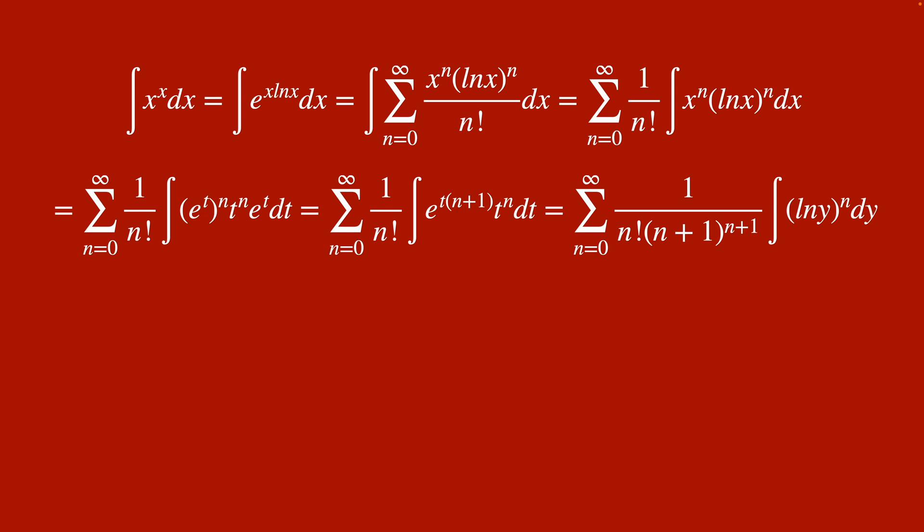I'm going to do our second substitution. I'm going to let e to the t times n plus 1 be y. So that dt is dy divided by n plus 1 times y, which gives this mess all the way on the right here.